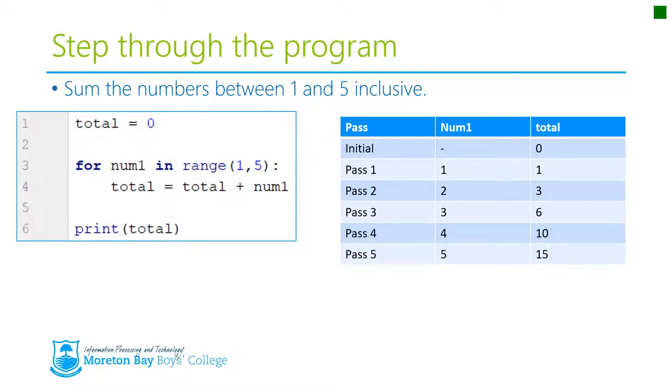So here's an example of a tabletop test. I've got a really simple for loop here which intends to sum the numbers between one and five inclusive. So the numbers one, two, five add them all up as it goes through. So I'm starting with a total here.